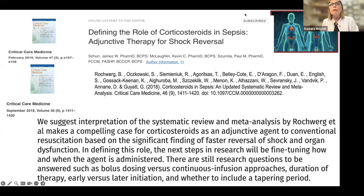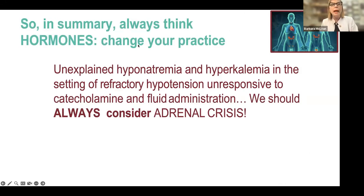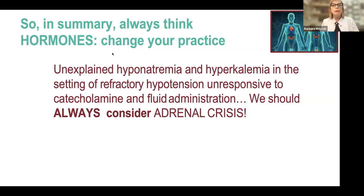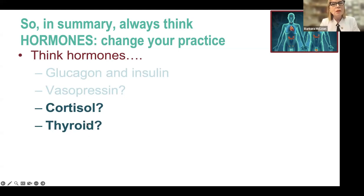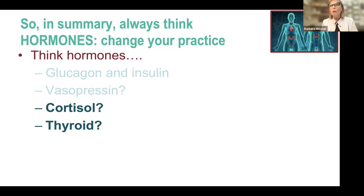In summary, always remember: unexplained hyponatremia, hyperkalemia, refractory hypotension, and relative hypoglycemia — always consider the possibility of critical illness adrenal insufficiency. Always think about the hormones that are not so evident and require investigation, but might make the difference between life and death for your patient. Thank you very much for sharing your afternoon with me.